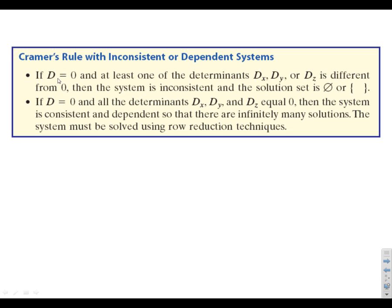A couple things: if D is 0, your system of equations is either inconsistent or dependent. If any of DX, DY, or DZ is not 0, then it's inconsistent. If all of your determinants — D, DX, DY, and DZ — are all 0, then the system is consistent and dependent. In that case, go back to row reduction, elimination, or substitution.